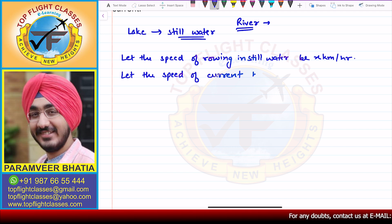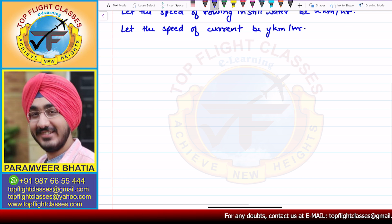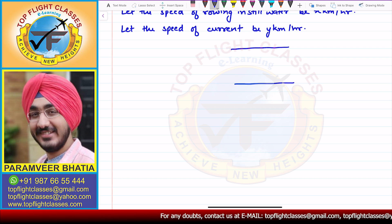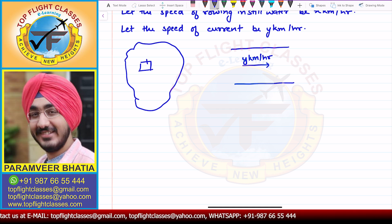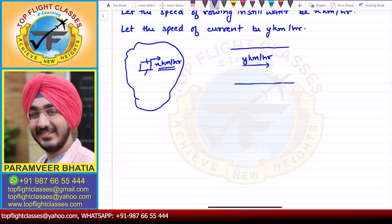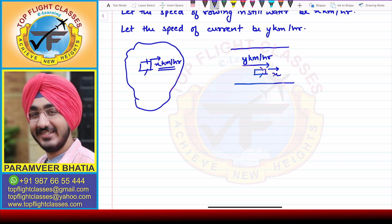Suppose this river is flowing in the right direction with a speed of y kilometer per hour, and we have a lake over here. When Ritu rows the boat in the still water, her speed is x kilometer per hour. Now, downstream means when we are going with the flow of the stream. So when Ritu rows her boat in the current's direction, her rowing speed x and the current's speed y both get added.